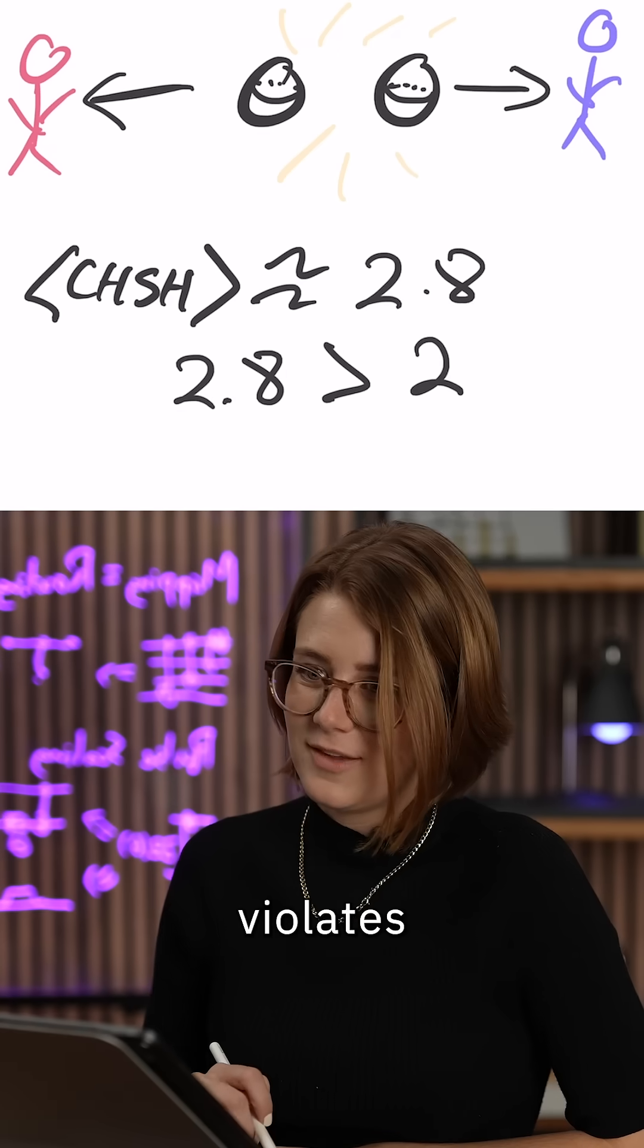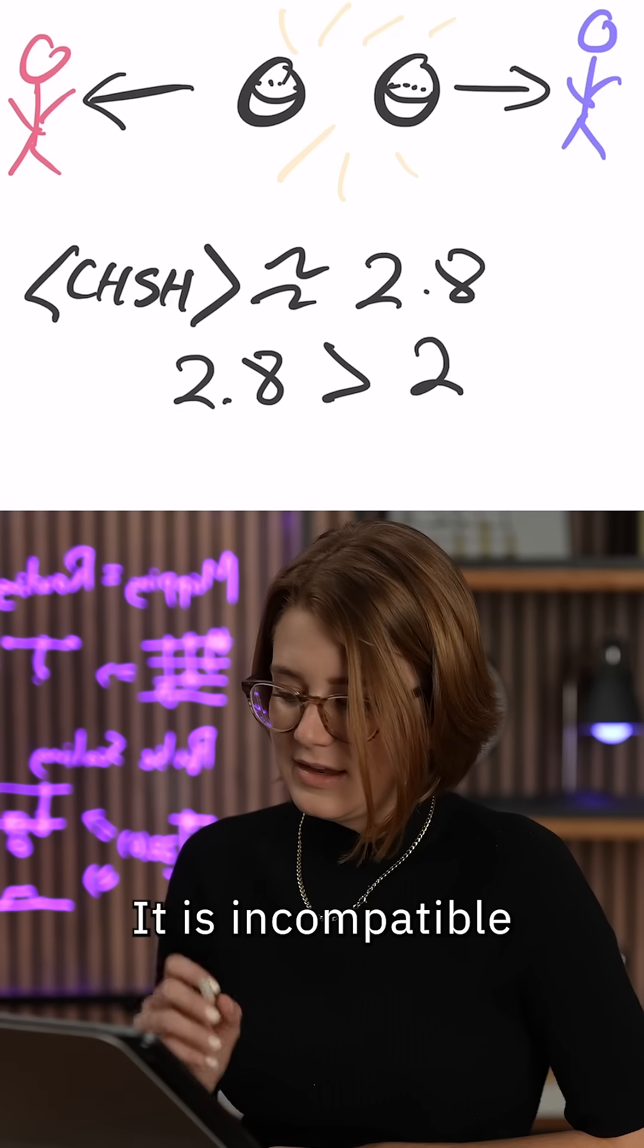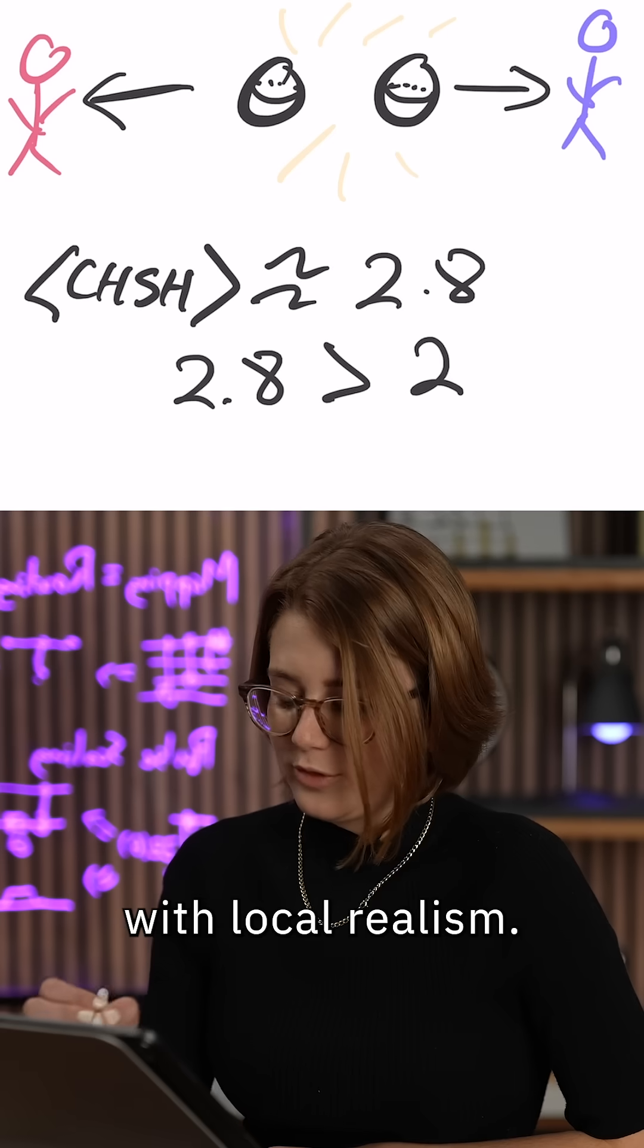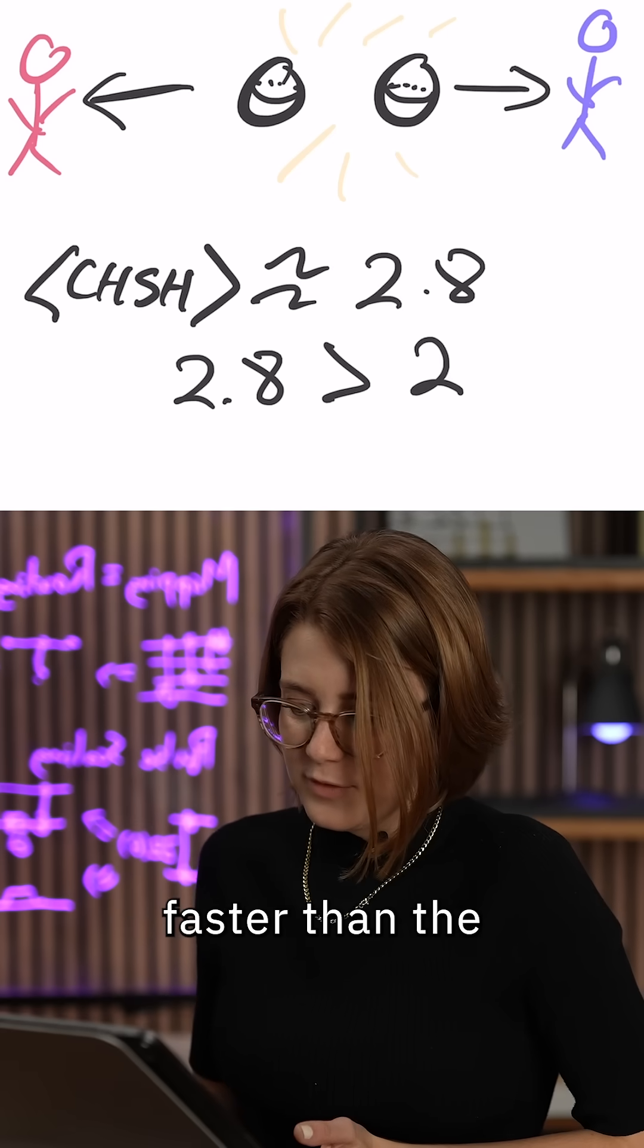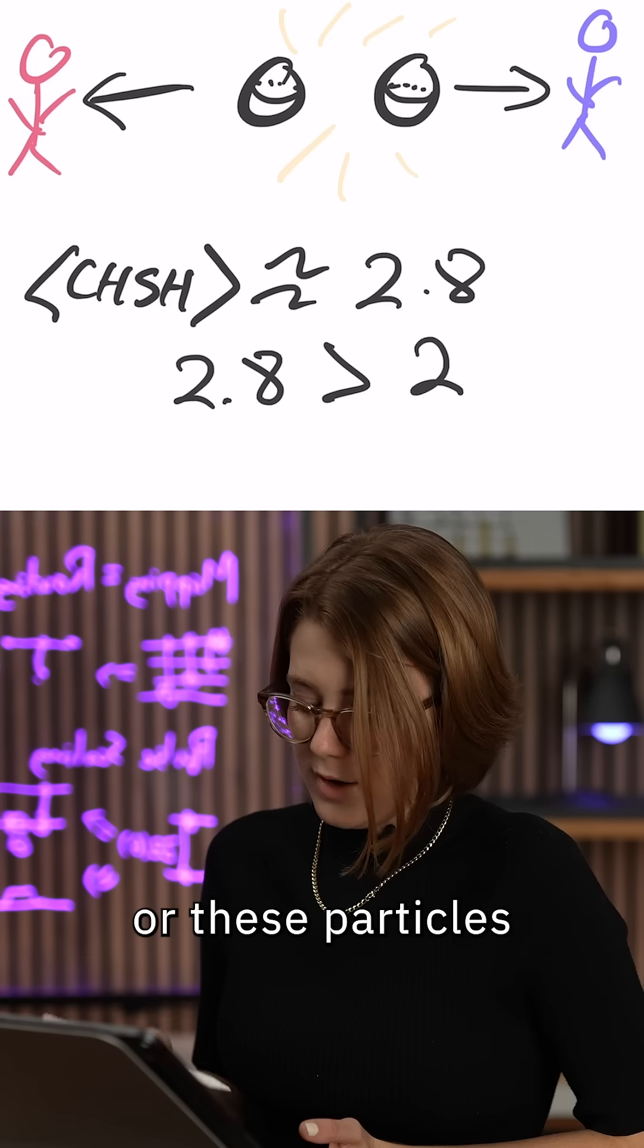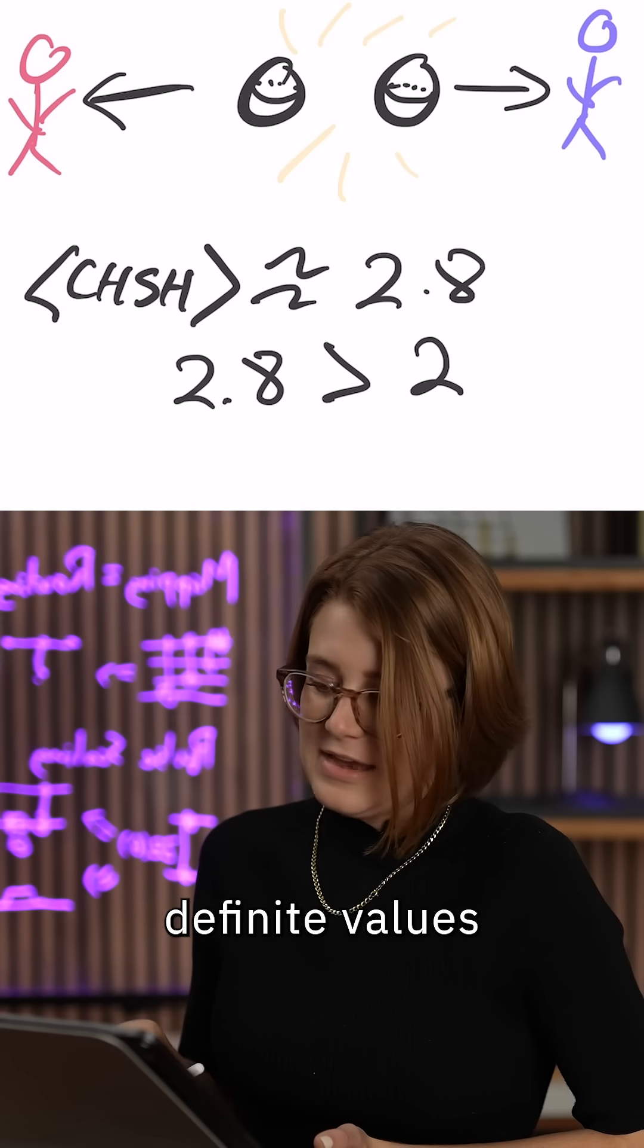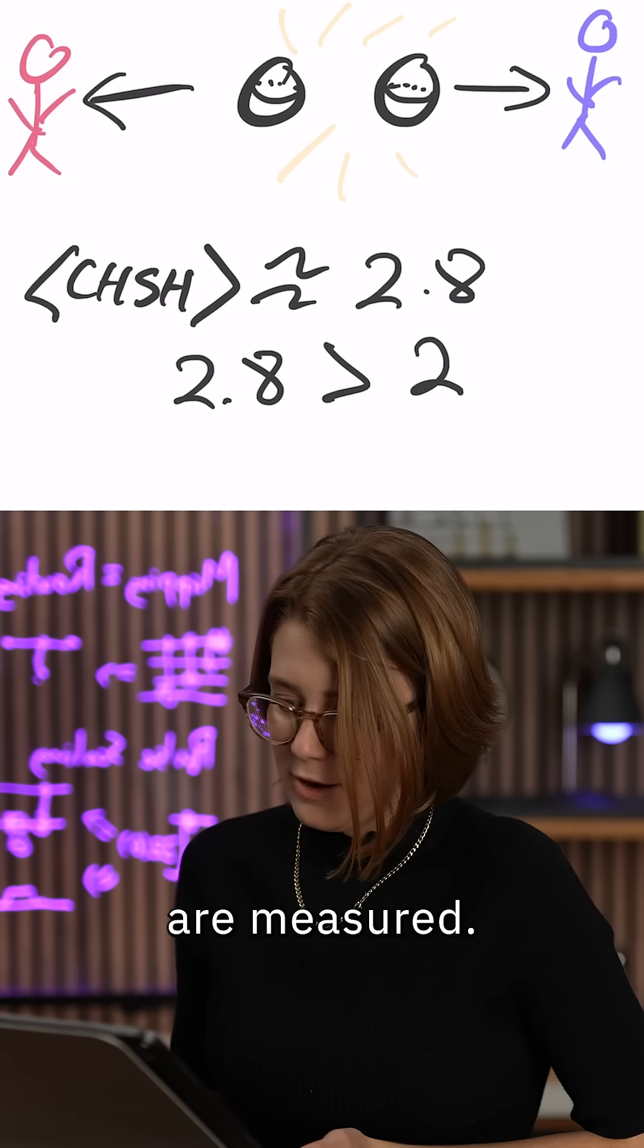Quantum mechanics violates Bell's inequality. It is incompatible with local realism. So either something is moving faster than the speed of light, or these particles do not have definite values before they are measured.